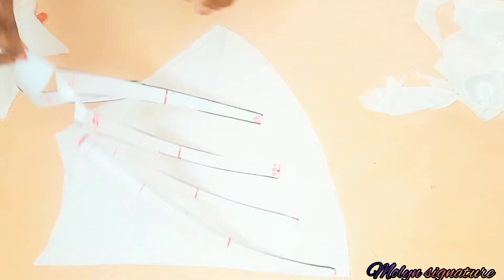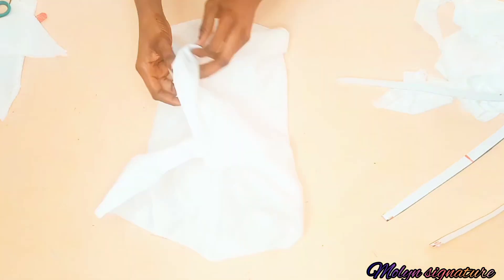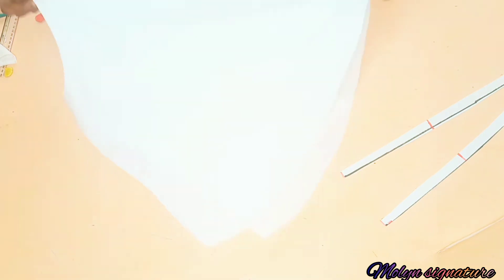And after that I just removed my pattern paper and I set it aside. Now this is what I have. I have a full pattern for my sleeve. And now the next thing I did was to duplicate this pattern on another fresh fabric for the second sleeve and this is what I have.